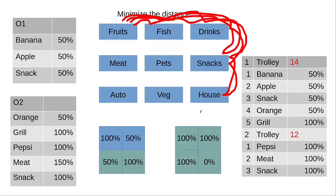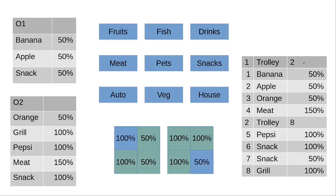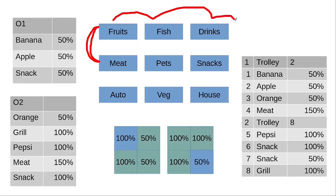Another constraint would be that each time we create the next step, we need to consider that the distance between the current plan step and the previous step should be minimized. You can see the solution here — for trolley number one, we did two steps combining orders from the fruit shelf and going only to the nearest one, the meat one. It's only two steps. After that, we assign trolley number two to go for drinks — two steps — then snacks, three steps, then grill, four steps, and four steps back. That gives us only eight steps, which is much better than before.